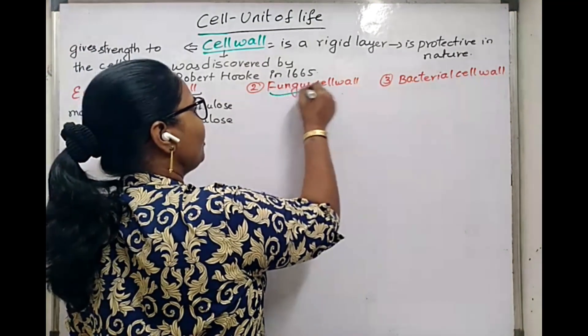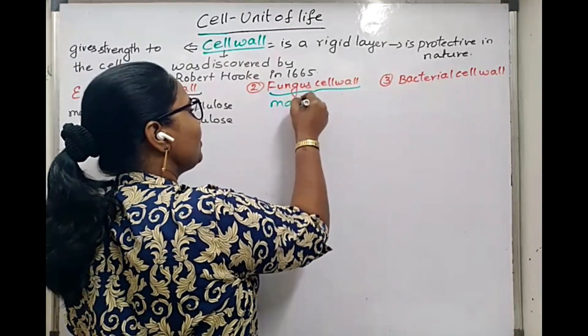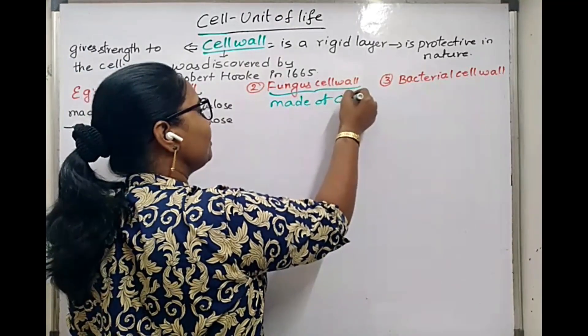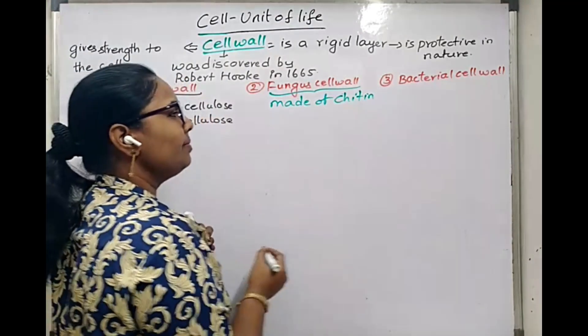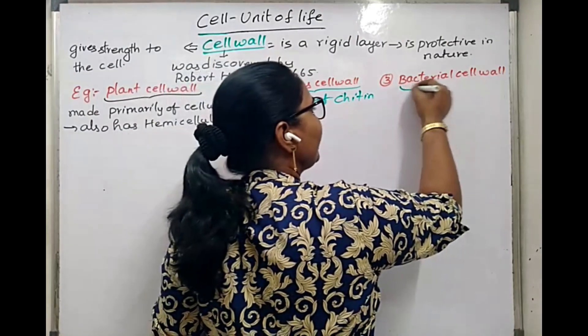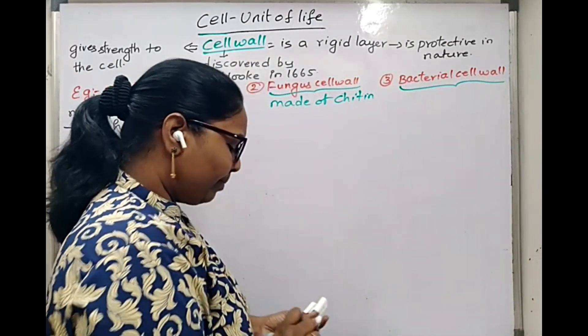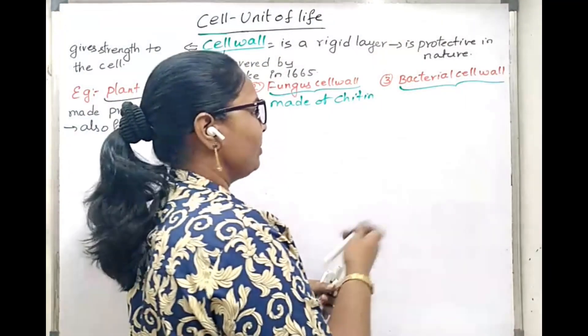Fungal cell wall is made of chitin. Bacterial cell wall is made up of a peptidoglycan membrane.